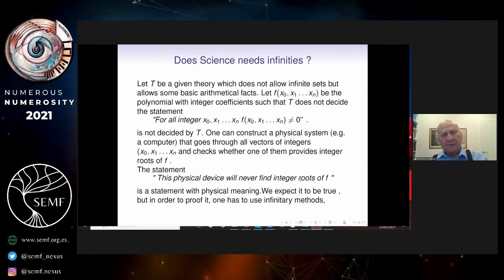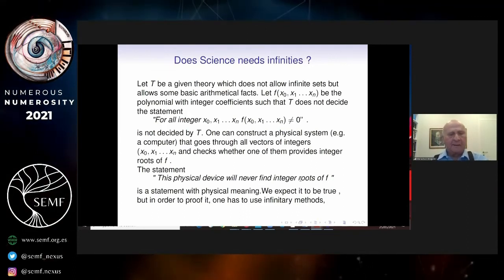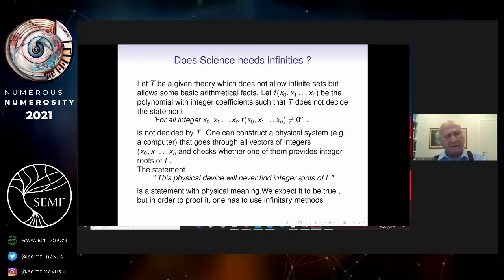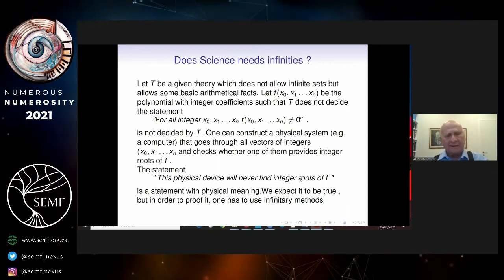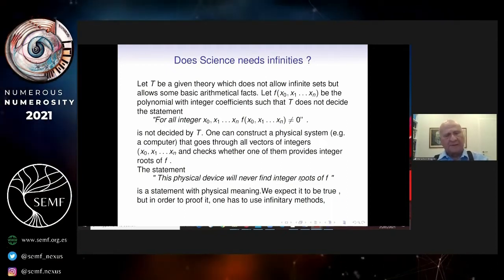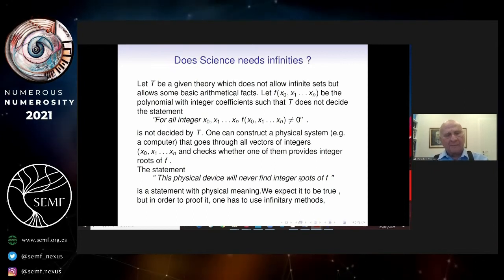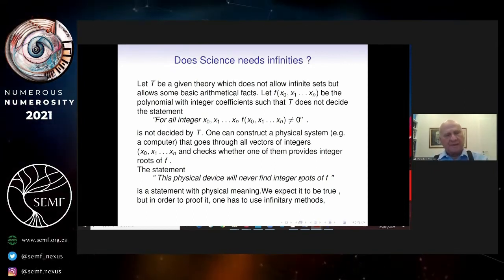Going out, essentially, is you use some infinitary methods, like proving the consistency of T, but that doesn't matter the technicalities. You can't just get away with just finite methods in order to derive this property of your physical universe.